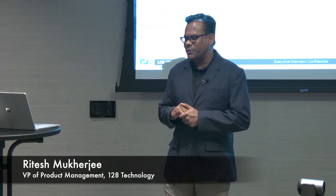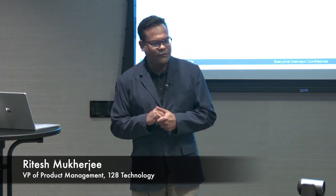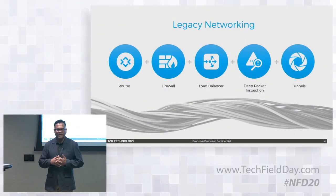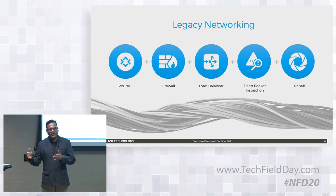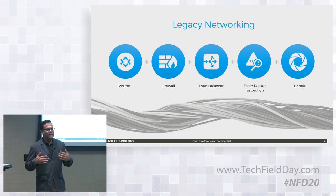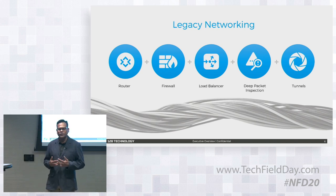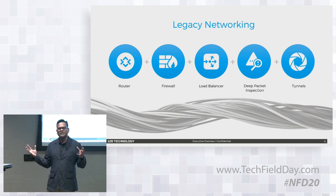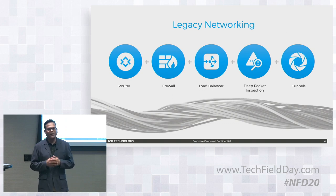Traditional networks are built in siloed fashions — routers, firewalls, load balancers, DPI. If you want to move things in one direction over the other, you have tunnels to expedite packet flow. All of these functions other than the router keep state and decide based on flows. What we decided is: if we could collapse this functionality into the router itself, we could have all these functions in the router and do many cool things.